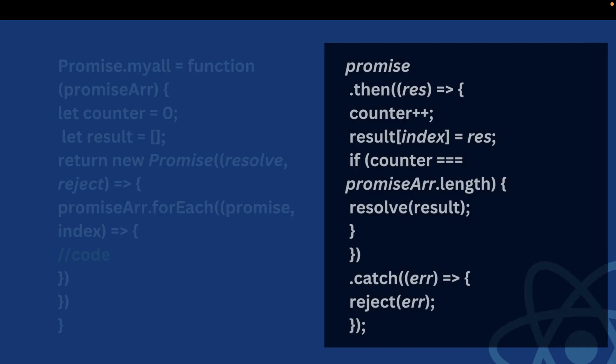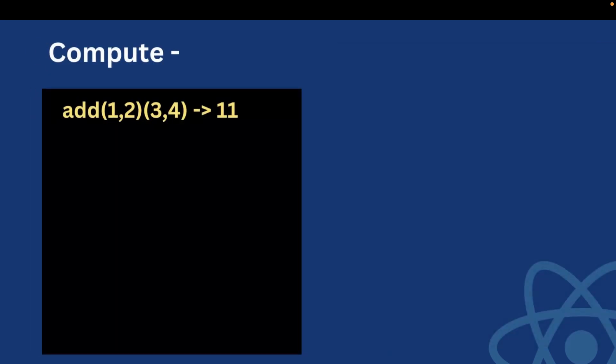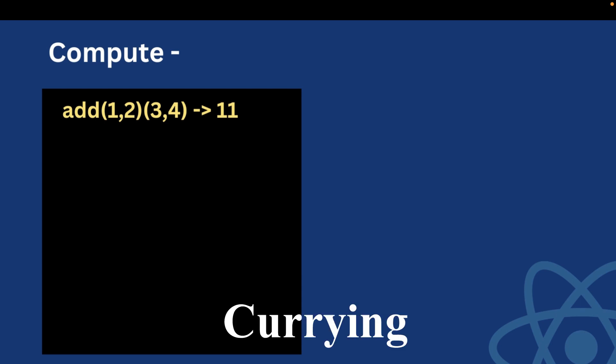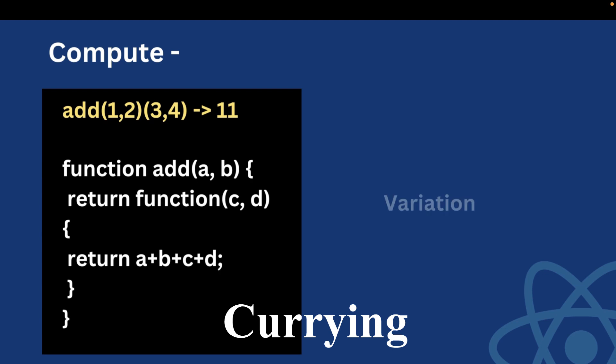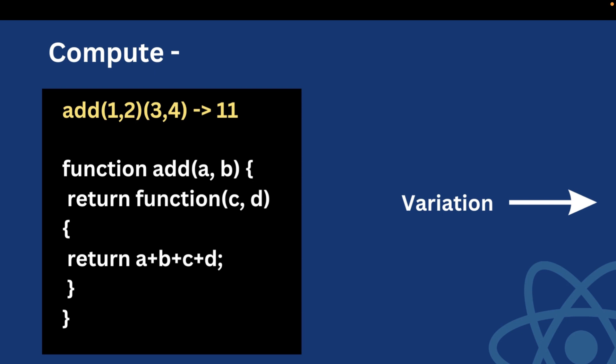Now let's look at the next question based on currying. We have a function add that takes (a, b), then returns another function taking (c, d), and finally returns a + b + c + d. You can also say that we have made a closure here.